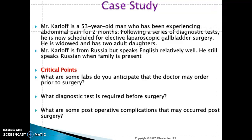Prior to someone going into surgery, what labs might a nurse anticipate the doctor to order for this patient? Some labs that may be ordered include a complete blood count (CBC), where the doctor wants to see the patient's RBC, WBC, hemoglobin, and hematocrit levels. A basic metabolic panel or blood chemistry to check sodium, potassium, and electrolytes. Also, blood cross-matching may be ordered in case the patient needs a blood transfusion.